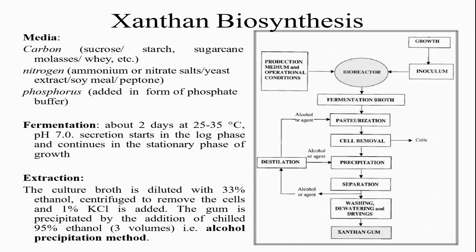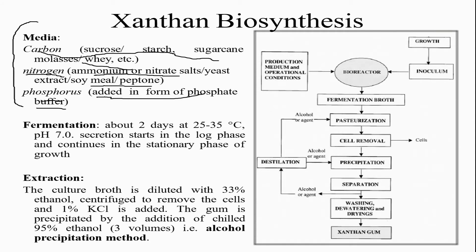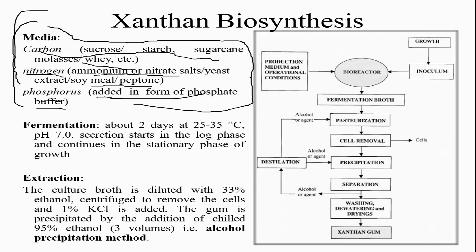Xanthan biosynthesis requires a carbon source, which can be obtained from sucrose, starch, sugarcane molasses, and whey. It also requires a nitrogen source, which can be obtained from ammonia or nitrate salts, yeast extract, or peptone. Additionally, a phosphorus source is added in the form of phosphate buffer. These are the nutrient sources required for xanthan biosynthesis.